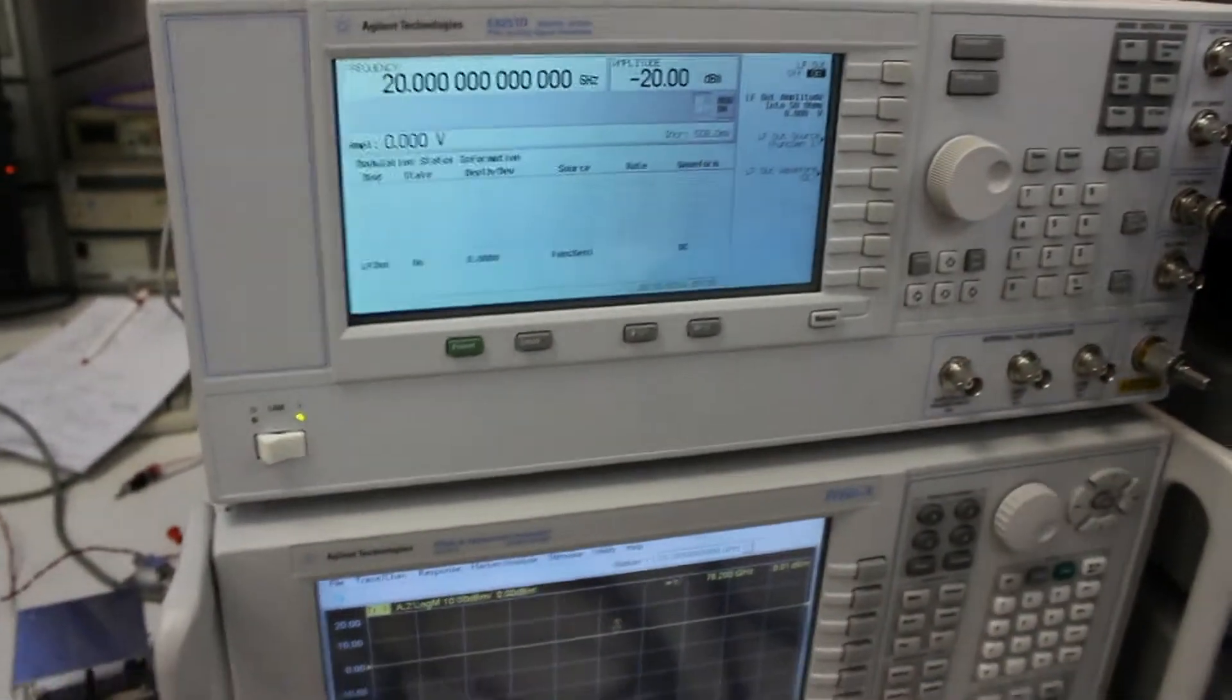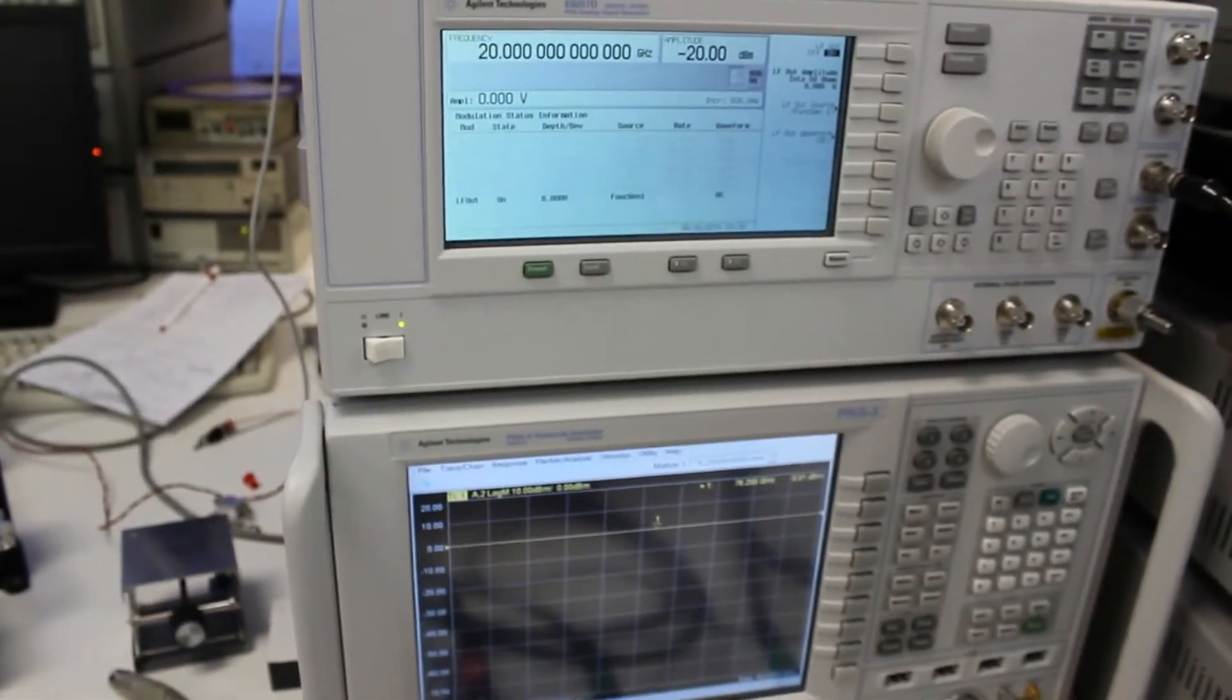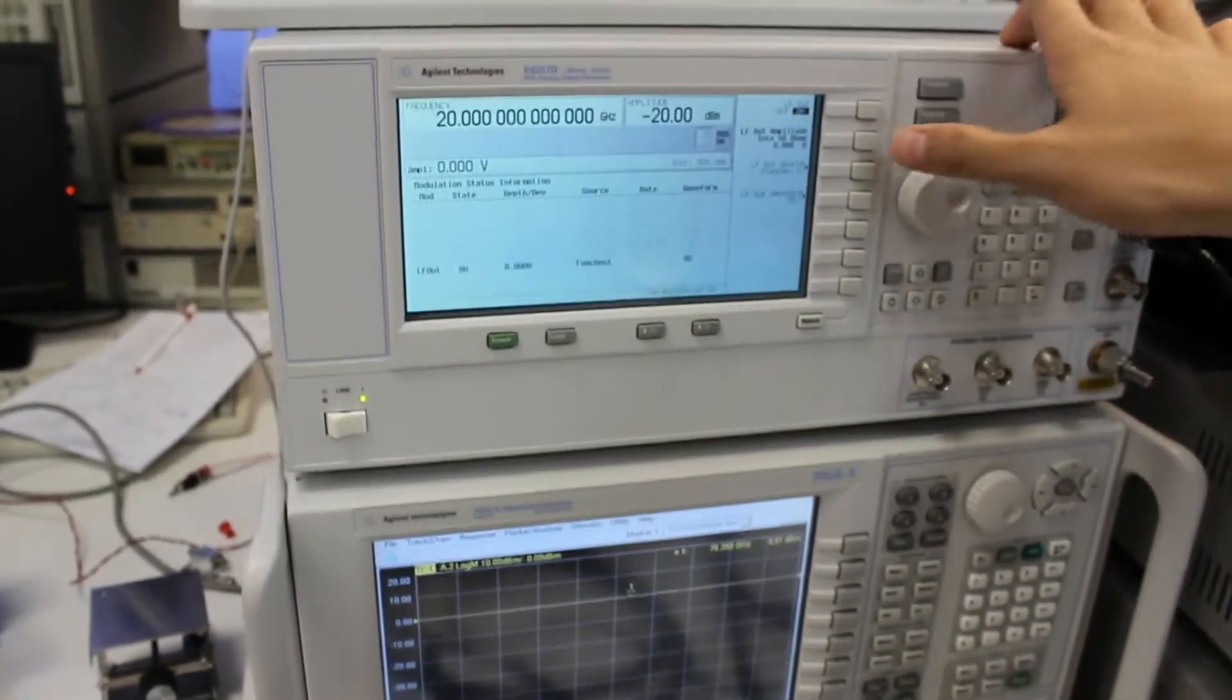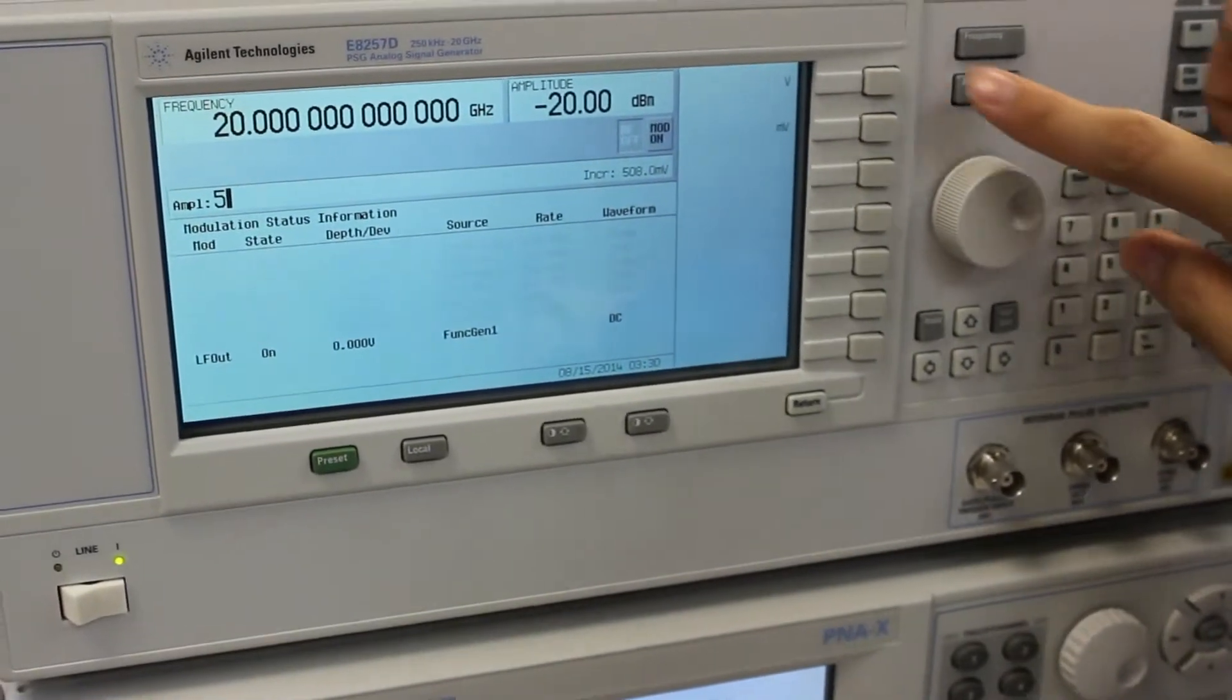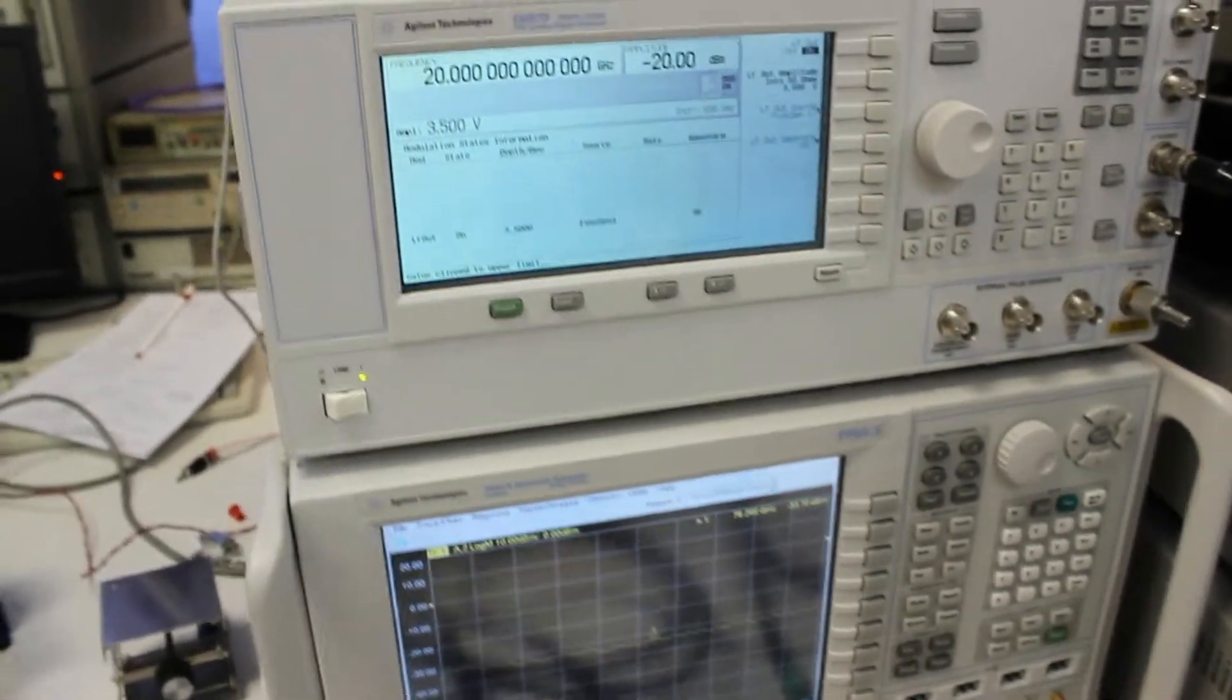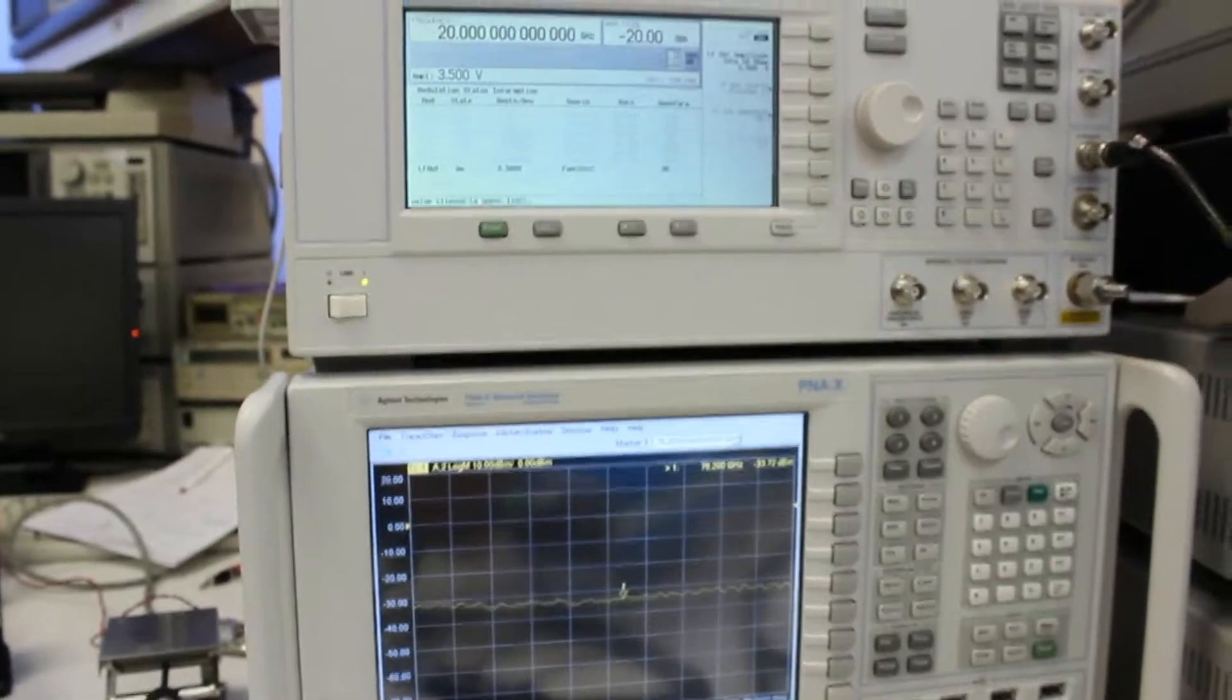Now the PSG is ready to control the attenuation. The voltage range for this particular PSG is 0 to 3.5 volts. If you select anything higher, it will still only reflect the 3.5 volt range. We will start at 0 volts.